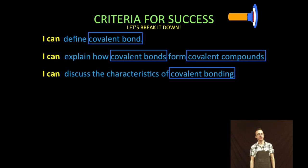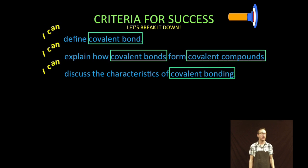First thing we're going to do, we're going to define what the heck a covalent bond is. Two, we are then going to explain how covalent bonds form covalent compounds. And then finally, numero three, we are going to discuss the characteristics of covalent bonding.